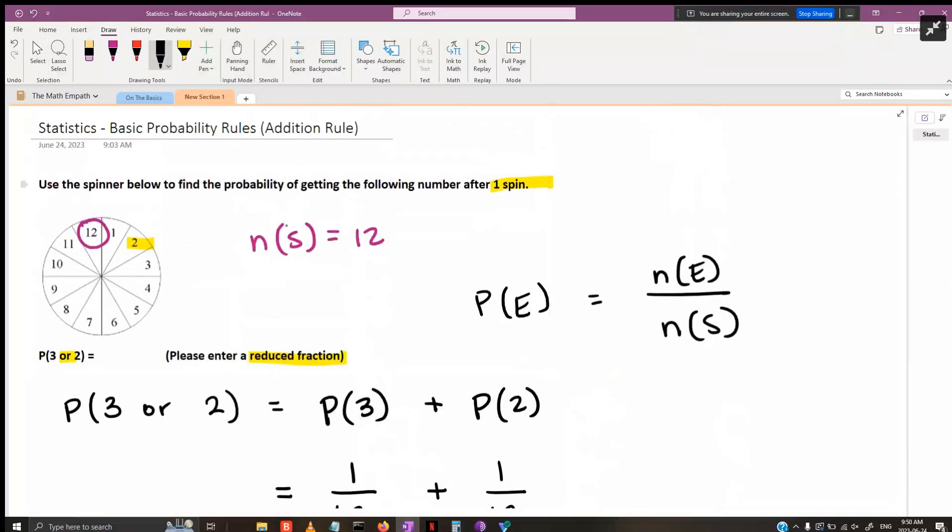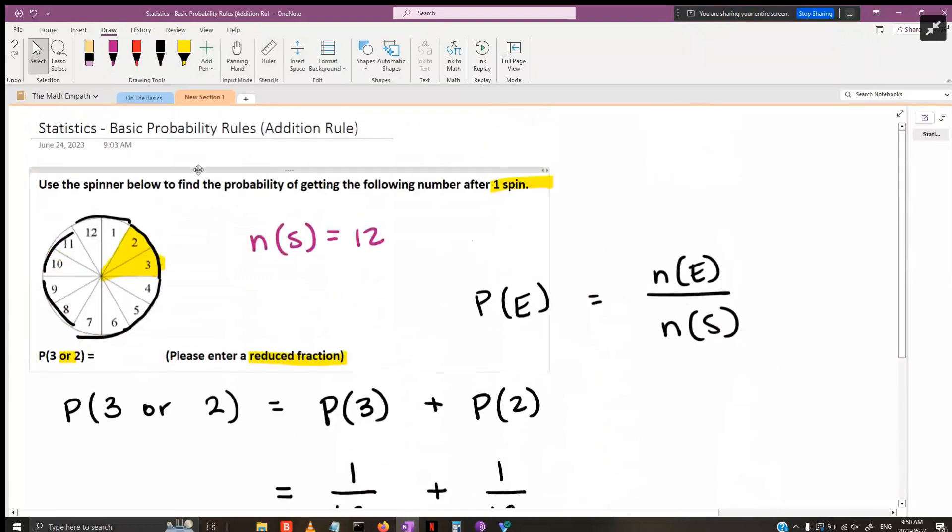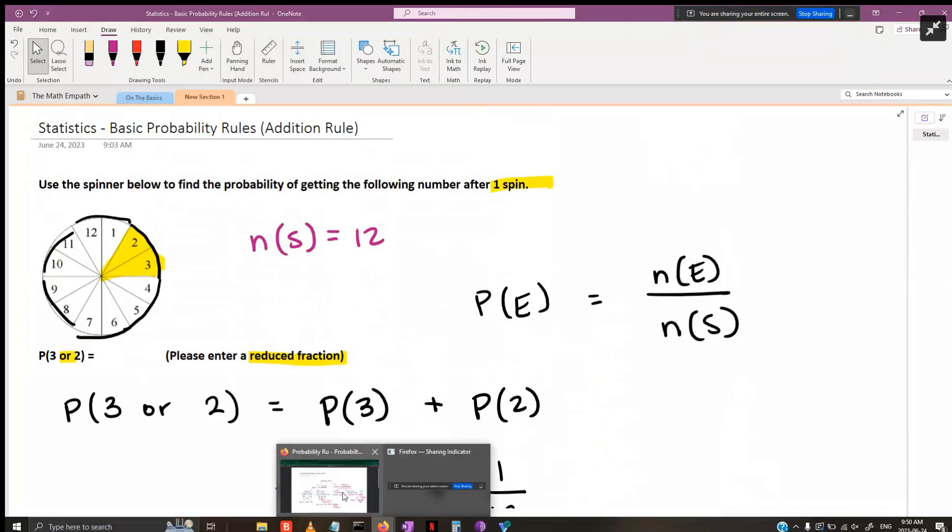Visually speaking, we've added these two probabilities, so we're looking at these two slices together. If you count, that's two together out of six parts in that spinner. That is your answer. I hope you found this helpful, and let us know if you have any questions.